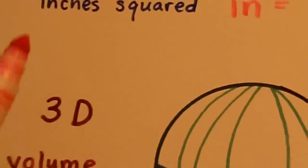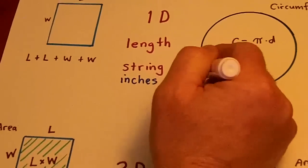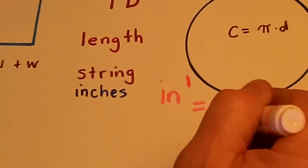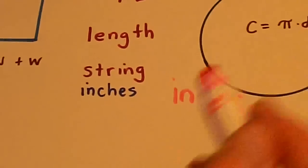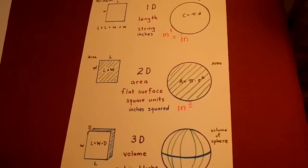And, of course, if we go to the number of inches along a string, it's inches to the first power, and anything to the first power is itself, so we only say it's measured in inches. Hope that helps clarify.